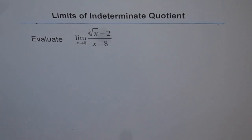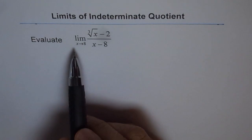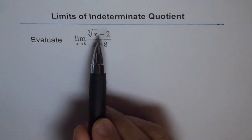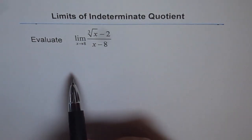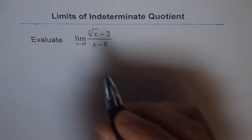Limits of indeterminate quotients. We are dealing with this in this playlist and we find that when we substitute the limiting value, then we get 0 over 0. So let's check it for this one also.